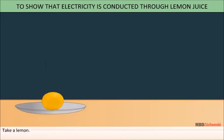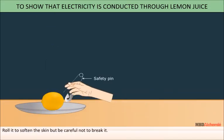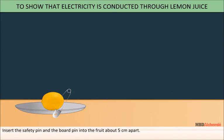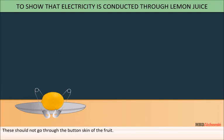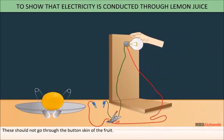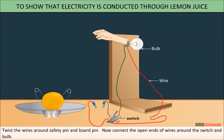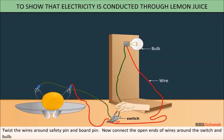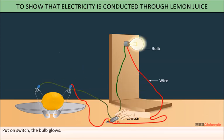Take a lemon. Roll it to soften the skin but be careful not to break it. Insert a safety pin and a board pin into the fruit about 5 cm apart. These should not go through the bottom skin of the fruit. Twist the wires around the safety pin and board clip. Now connect the open ends of the wires around the switch and bulb. Put on the switch — the bulb glows.